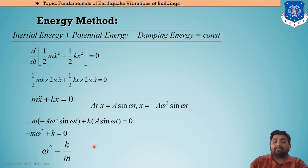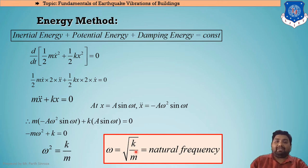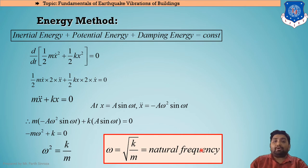Taking the square root, ω = √(k/m). This is the natural frequency. In your books it is simply stated that ω = √(k/m), but this energy method derivation shows where it comes from. This equation is used in most numerical problems when asked to find the natural frequency of a body.